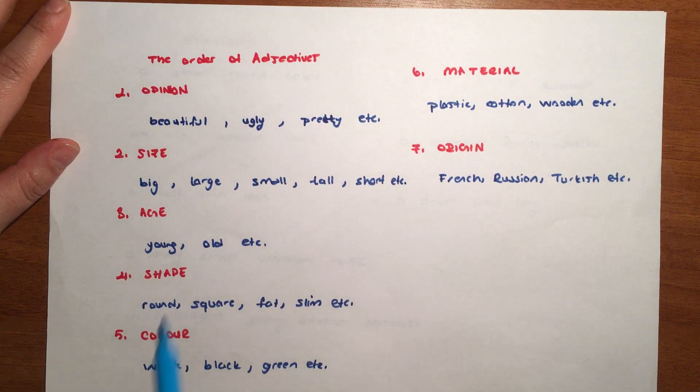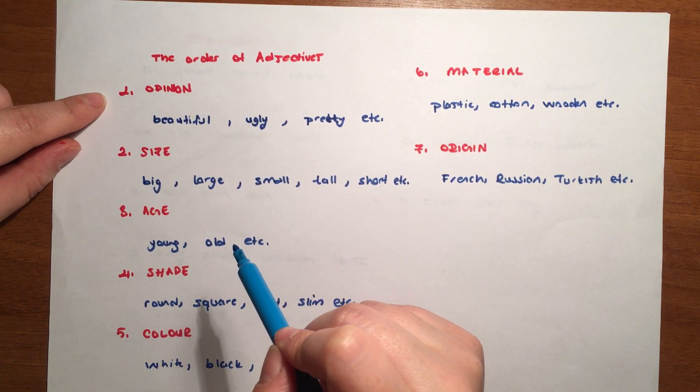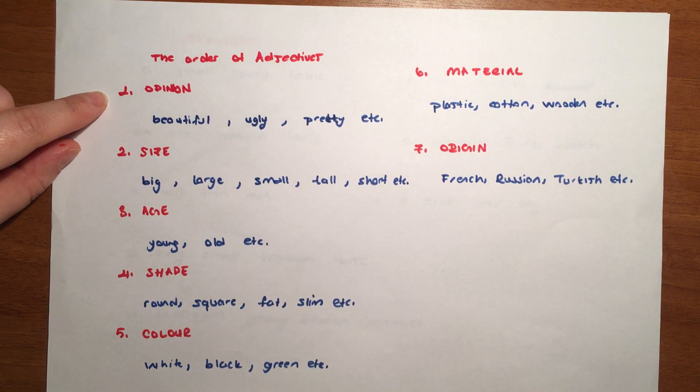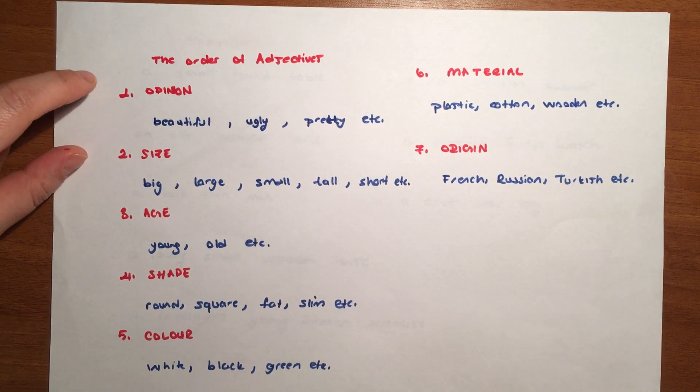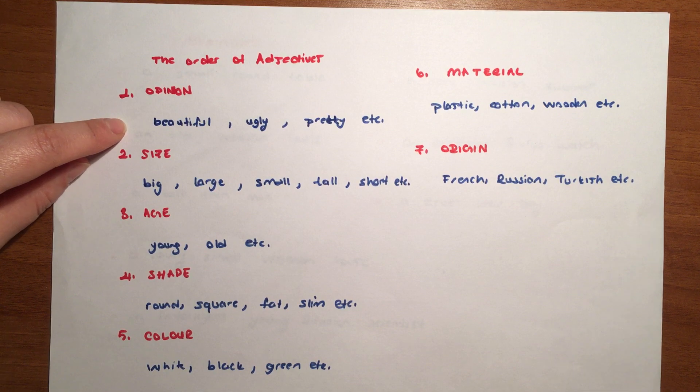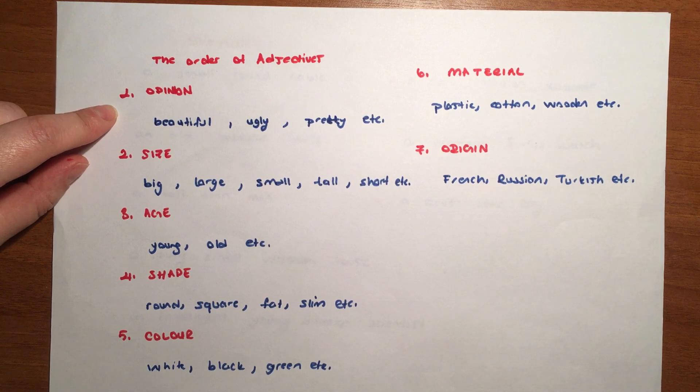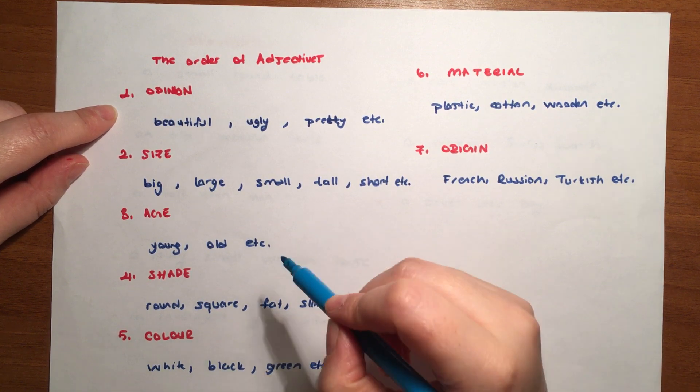Let's continue with order of adjectives. First we use opinion. Opinion is what we said. What can we say? Opinion is when we're expressing an opinion. Which adjectives can we use for these? Beautiful - a beautiful girl. This is actually an opinion adjective. Ugly, pretty, and etc. These are opinion, viewpoint adjectives.